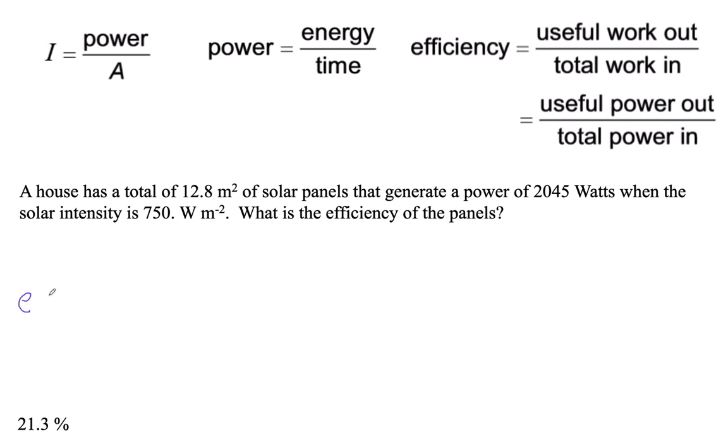Okay, so efficiency is going to be the output over the input. And the output we're told is 2,045 watts. So then the question is, what's our input? And our input's going to be from this.